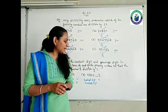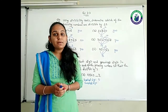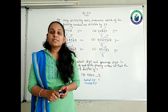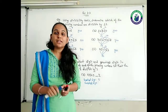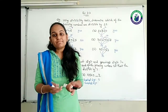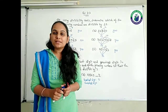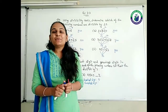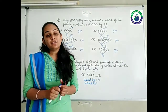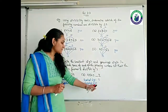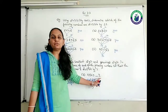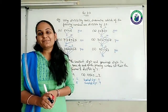24 plus 7 is 31 — not divisible. 24 plus 8 is 32 — not divisible. 24 plus 9 is 33 — yes, 33 is divisible by 3. So the smallest digit is 0 and the greatest digit is 9. I hope friends, we understood this.